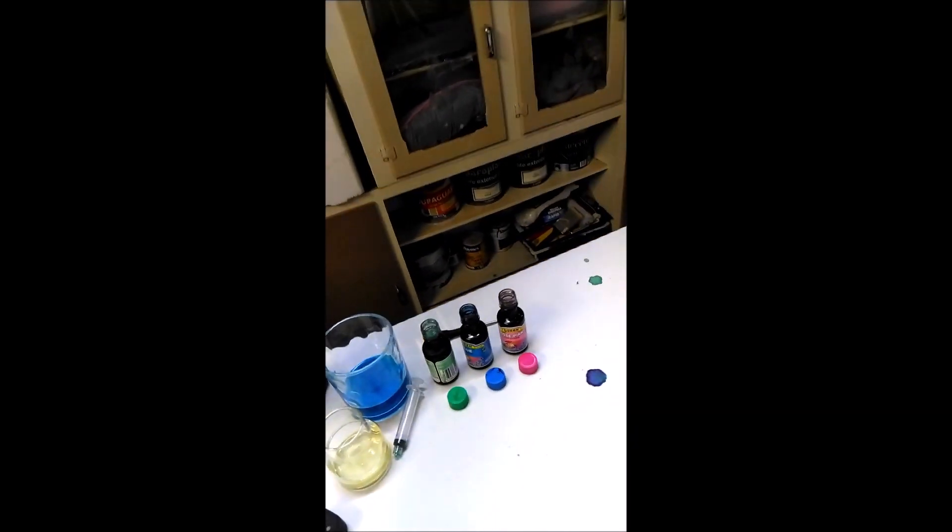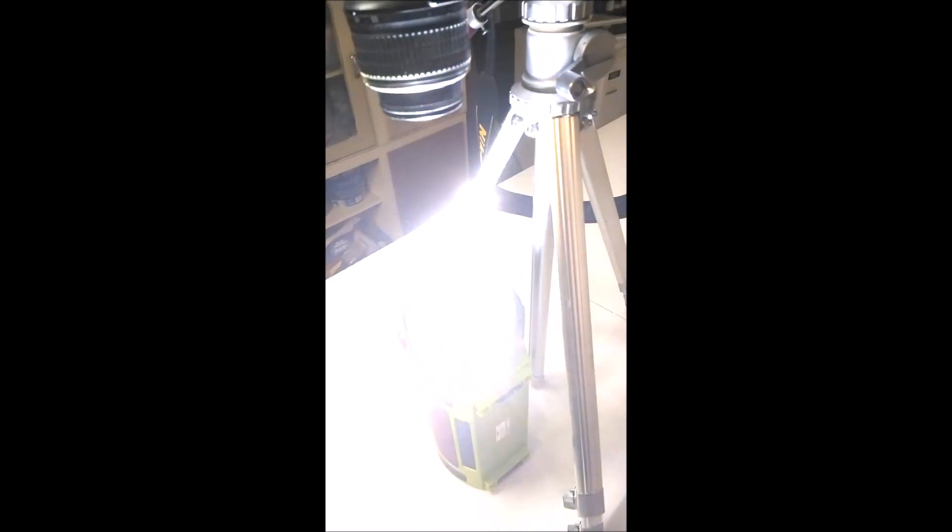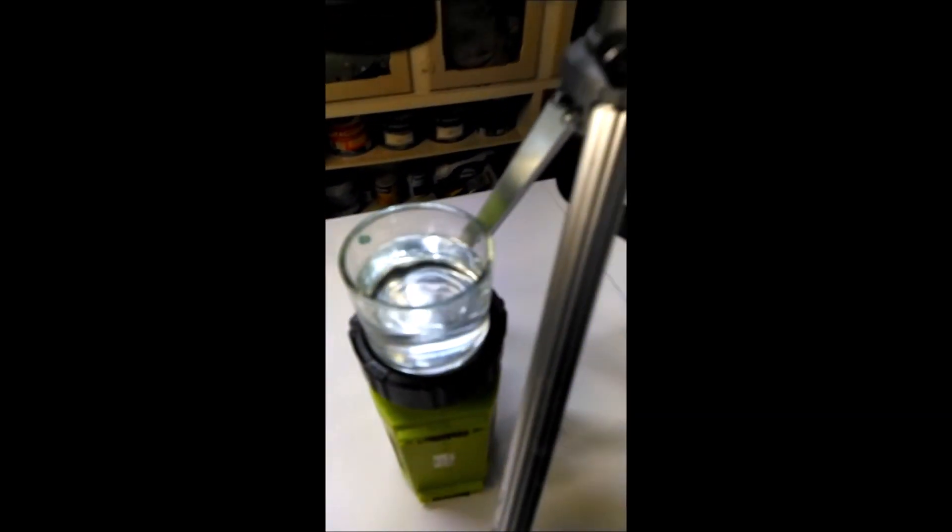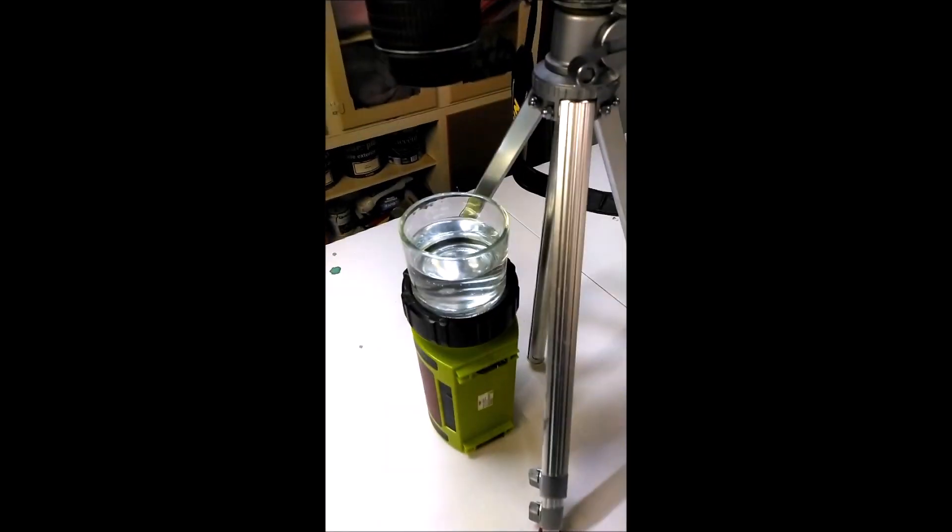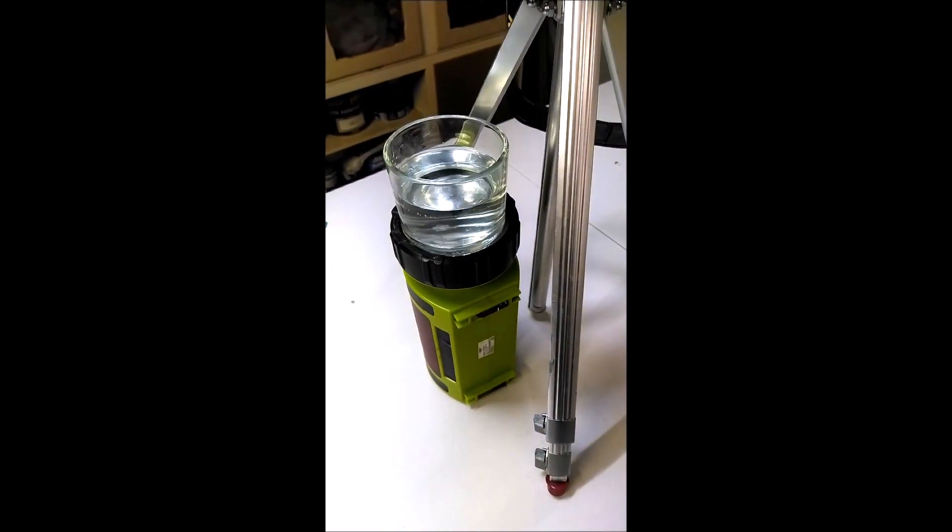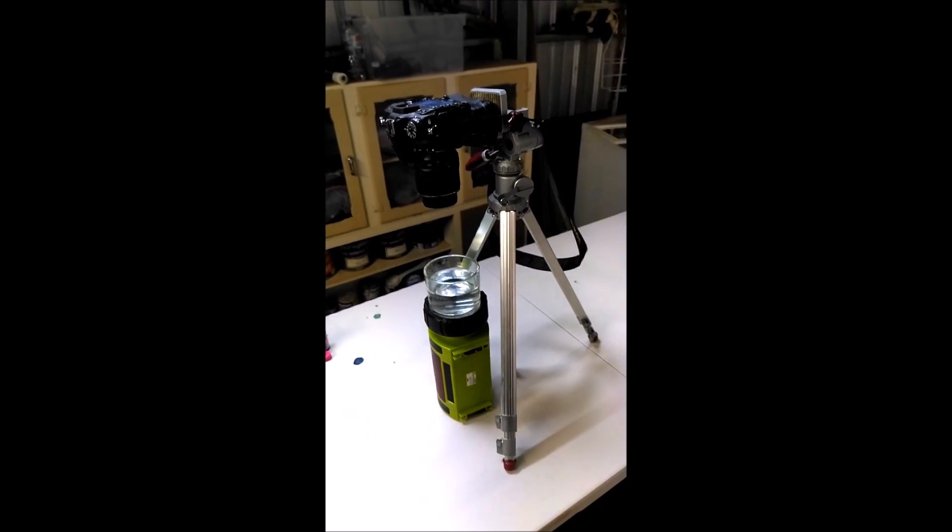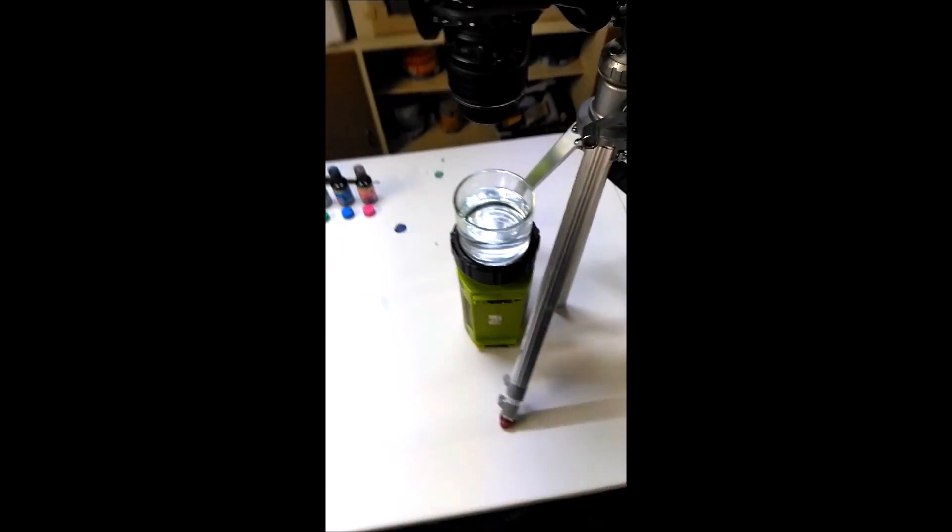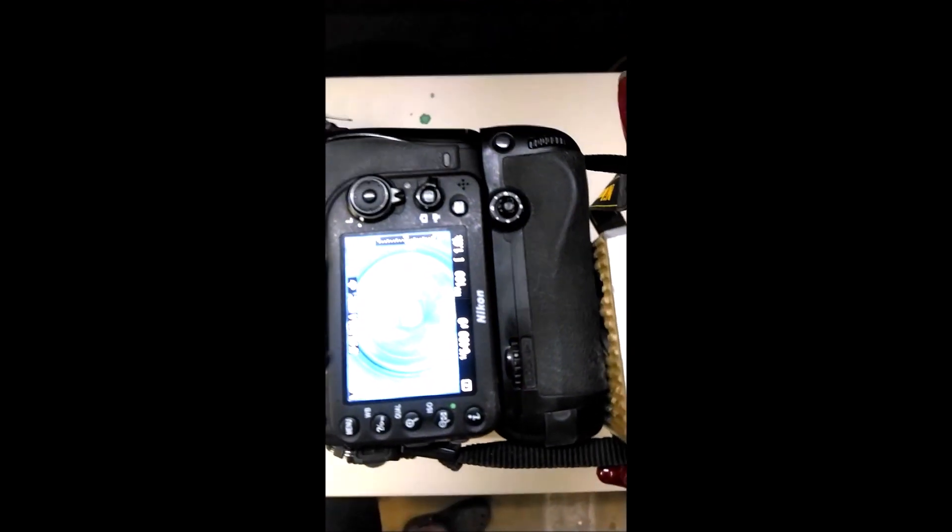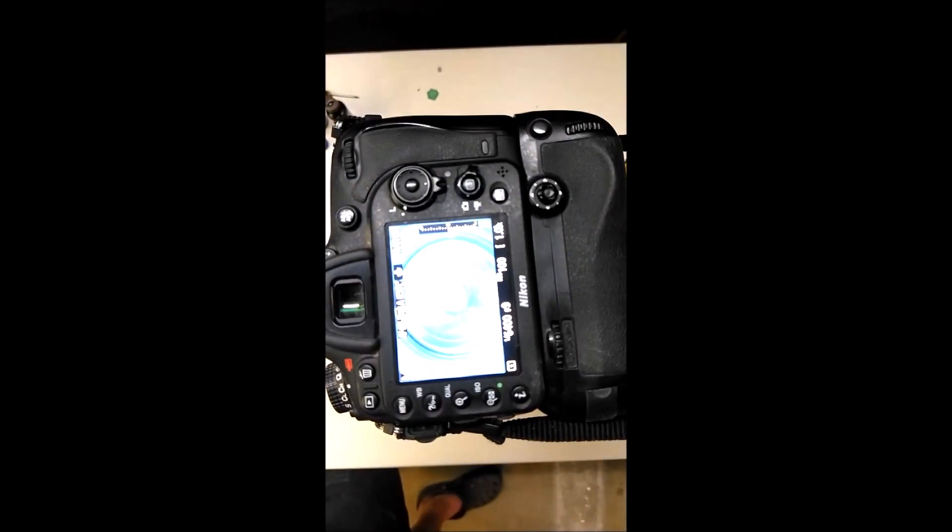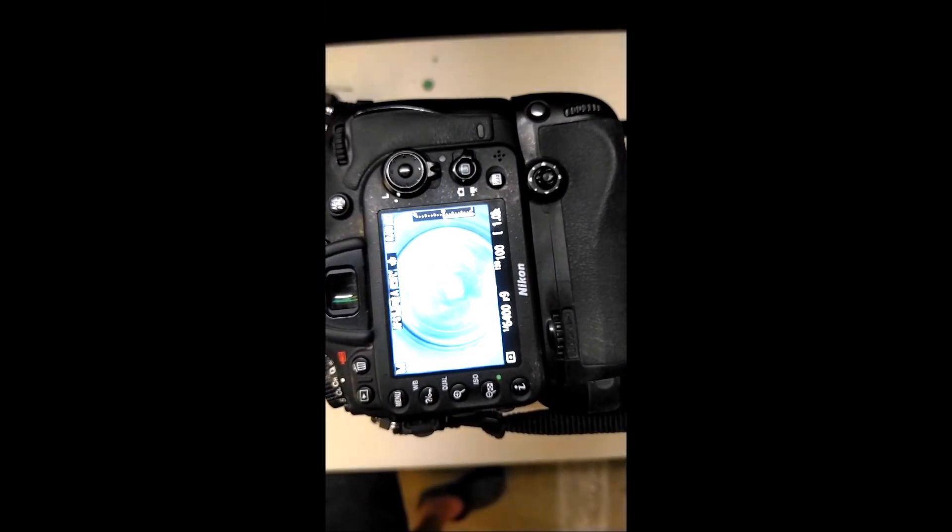So here we've got the... wow, that is really bright through the camera. I'll just switch that off so you can see it a bit better. There we go. All right, so there's a glass just sitting on top of the torch and there is my camera facing straight down.